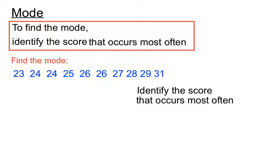Identify the score that occurs most often. Now the 24s, there's two of them. But there's also two 26s. So can you have two modes? Well you can kind of have a mode that is equal first. So the modes there are 24 and 26. And yes, we're allowed to have more than one mode.